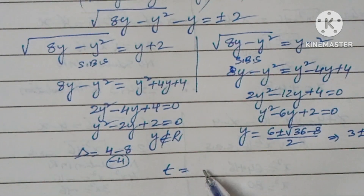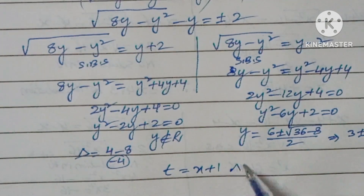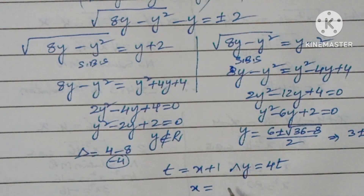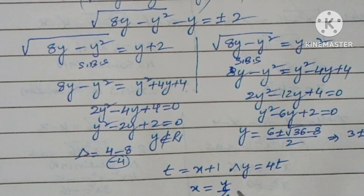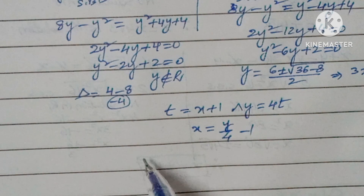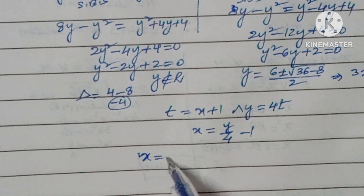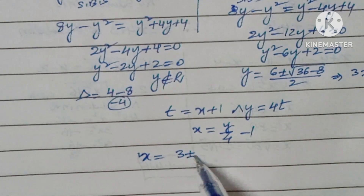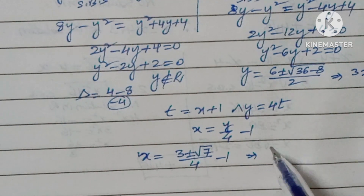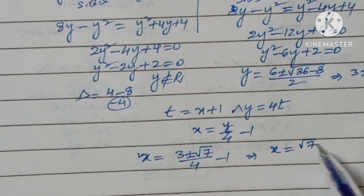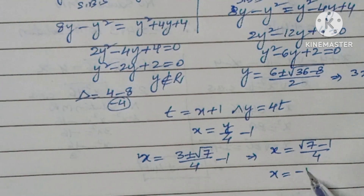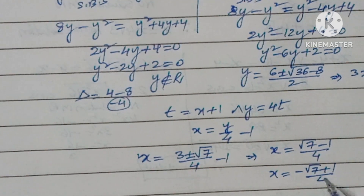Now, since t equals x plus 1 and y equals 4t, combining these gives x equal to y divided by 4 minus 1. Replacing the y value: x equals (3 plus or minus square root 7) divided by 4 minus 1. This implies x equals (square root 7 minus 1) divided by 4, or x equals (1 minus square root 7) divided by 4.